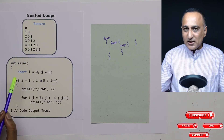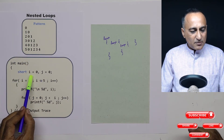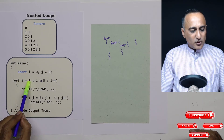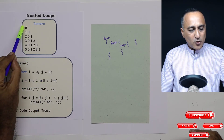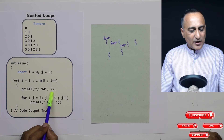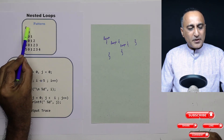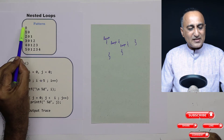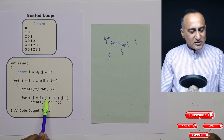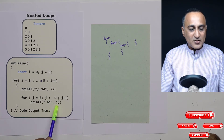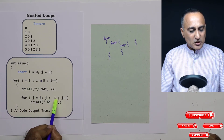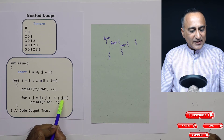I have declared integer variables i equal to zero and j equal to zero. I am executing the outer loop for i equal to zero, i less than or equal to five, because I want all the numbers from zero to five to be printed. The first time, I am printing the value of i, which happens to be zero. Now I want to print one number next to it, as long as that number is not equal to zero. So I'm starting from j equal to zero, and as long as j is less than i, I am printing the value of j. But here j is zero, and zero is not less than zero because i is also zero, so it will never print anything.